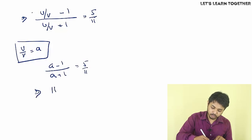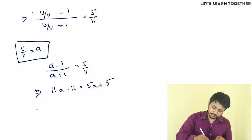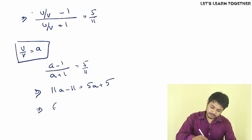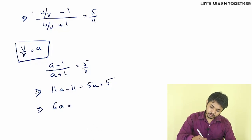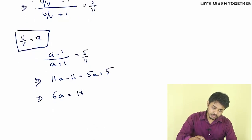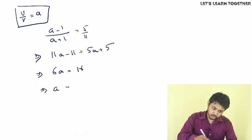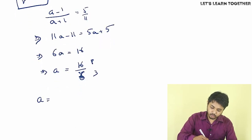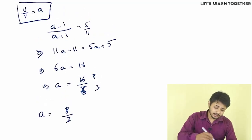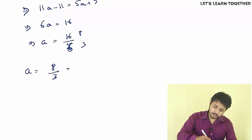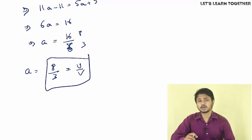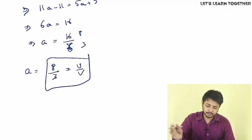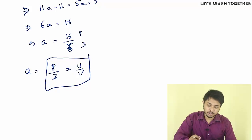Cross-multiplying: 11U minus 11 equals 5U plus 5, giving 6U equals 16, so U equals 16 by 6 which is 8 by 3. Therefore U by V, the ratio of boat speed to stream speed, equals 8 by 3. This is the answer.